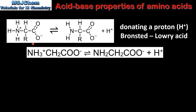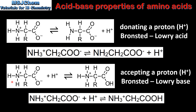In this reaction we have the amino acid donating a proton, therefore acting as a Bronsted-Lowry acid. Here we have the equation for the amino acid glycine acting as a Bronsted-Lowry acid by donating a proton. In this reaction the amino acid is accepting a proton, acting as a Bronsted-Lowry base. And here we have the equation for the amino acid glycine accepting a proton, therefore acting as a Bronsted-Lowry base.